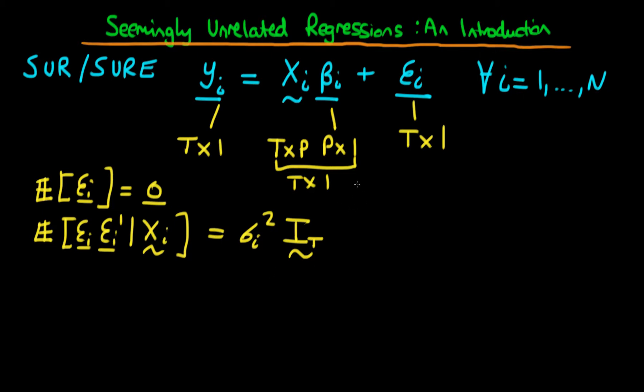But what we're gonna assume in this particular setup is that between individuals, there is a degree of contemporaneous correlation. In other words, the expectation of E_i_t times E_j_t, given that we have both of their individual's independent variables, which I'm gonna call X here, that might be equal to some non-zero number, which I'm gonna call omega_i_j. And this is gonna hold for all i and for all j. There are gonna be different values of omega_i_j for each of those different situations.